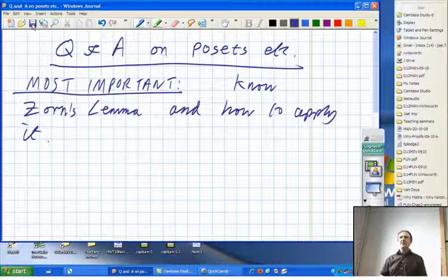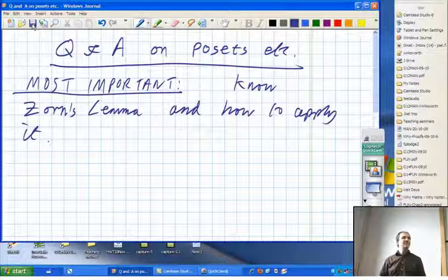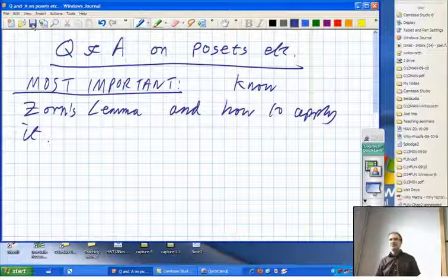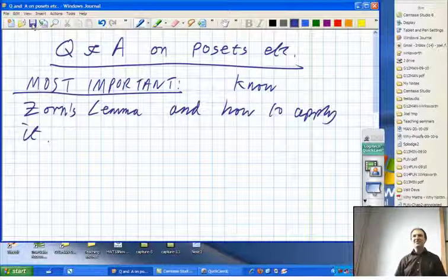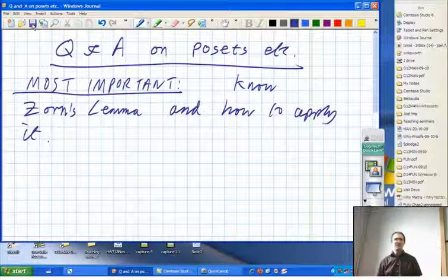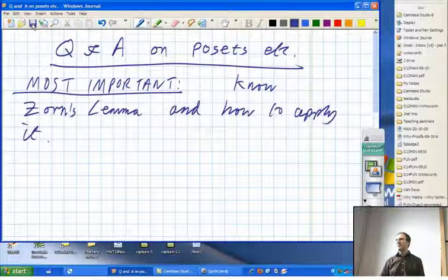But on the other hand, you may have questions about any of the other stuff in the partially ordered sets section. So, does anybody have any prepared questions you want to ask me about from the material, from the questions in that section, or from the solutions?